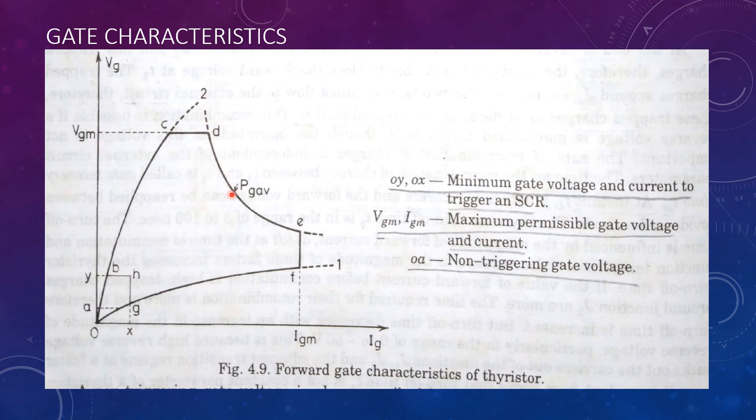The curve over here shows the average gate power dissipation curve. It is denoted by PGAV. If the average gate power dissipation exceeds the PGAV curve, the thyristor can get damaged.